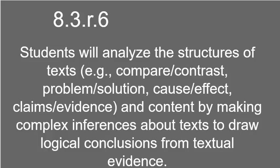This is part of having critical reading skills. Having critical reading skills takes time — we have to really dig deep into the text. In order to develop those skills, we have to read, read, read different things and look at them with a critical eye. So for standard 8.3.R.6, students will analyze the structures of the text — comparing and contrasting, problem and solution, cause and effect, and claims and evidence — and the content, by making complex inferences about text to draw logical conclusions from textual evidence. You're going to look at how the author wrote it, why they used those structures, figure out what they wanted you to learn, and draw a logical conclusion from what you have read.